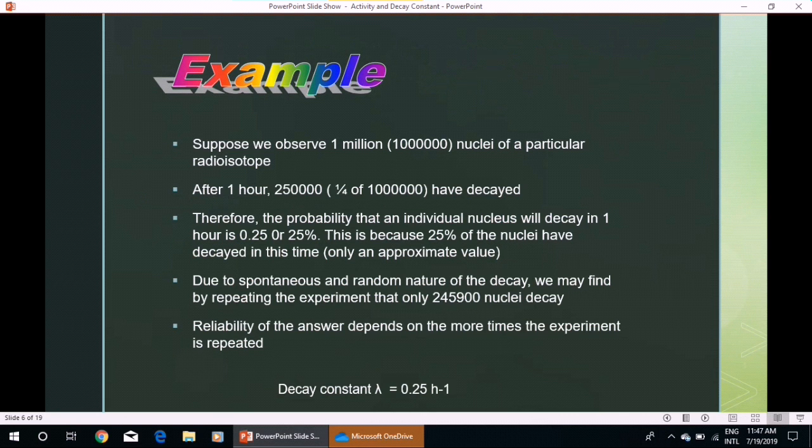Example: suppose we observe 1 million nuclei of a particular radioisotope. After 1 hour, 250,000—that is, one-fourth of 1 million—have decayed.